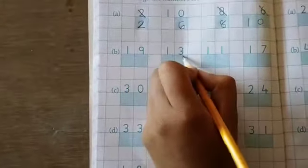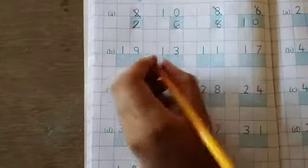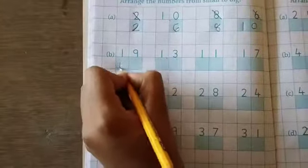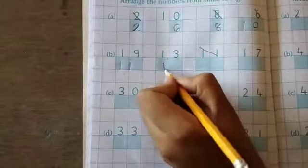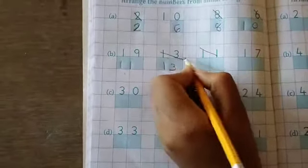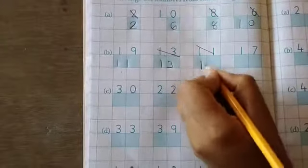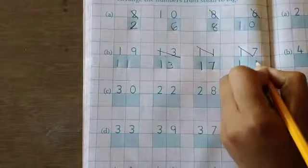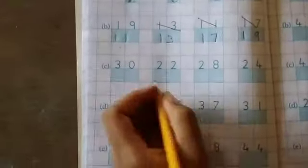Then next. 19, 13, 11 and 17. So 11 come first. Cut from there. 13. Cut from there. 17. Cut from there. And 19. Then next.